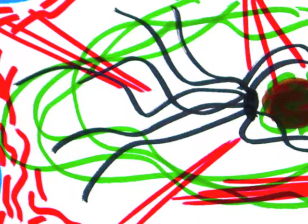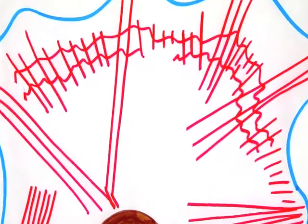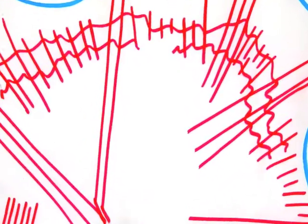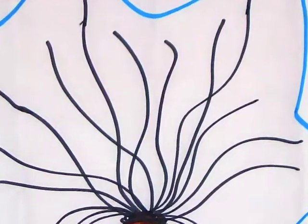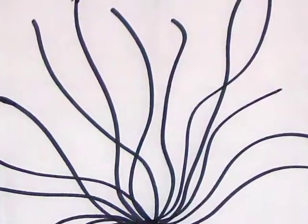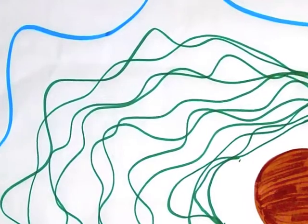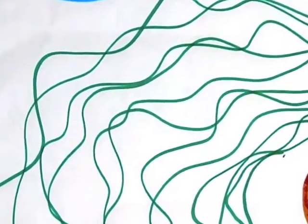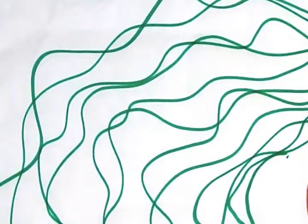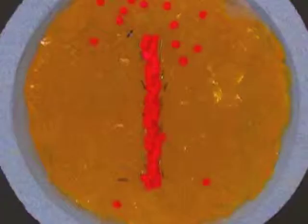The cytoskeleton's primary components are actin filaments, microtubules, and intermediate filaments, each of which has a unique formation process and purpose within the cell.